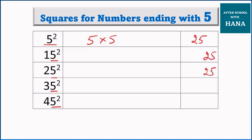Now we have here 15 squared. We see here 1. What we are going to do with 1? We will multiply it with the next number. 1 multiply by 2 is 2. So 15 squared becomes 225.